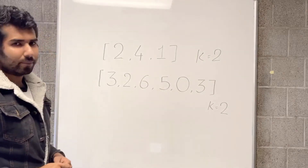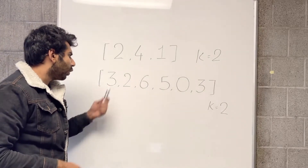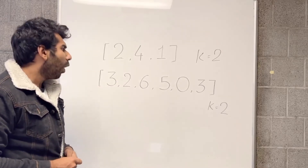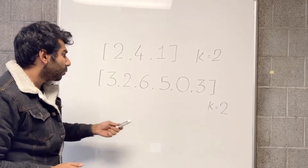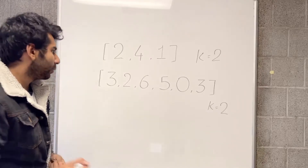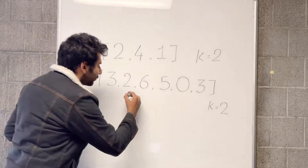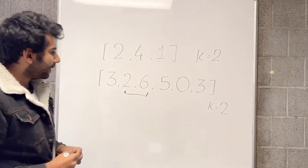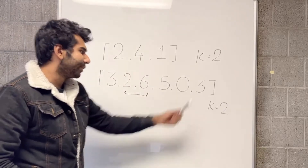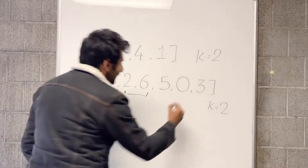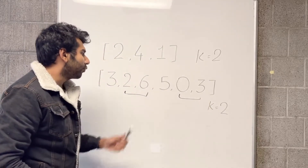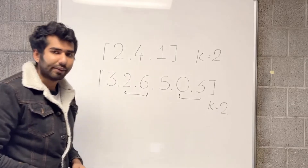What about this example? We can start buying the stock at 3 and probably sell at 6, or we can buy the stock at 2 and sell it at 6, which gives more profit — so that can be our first transaction. And we can probably buy at 0 and sell at 3 as our second transaction, giving us a profit of 4 plus 3, which is 7.